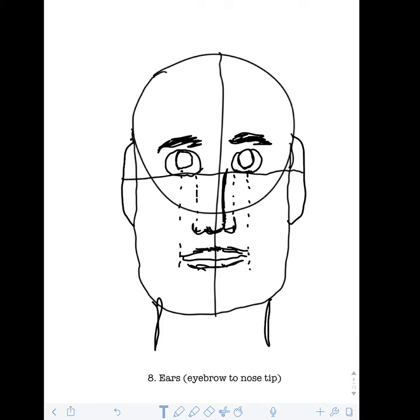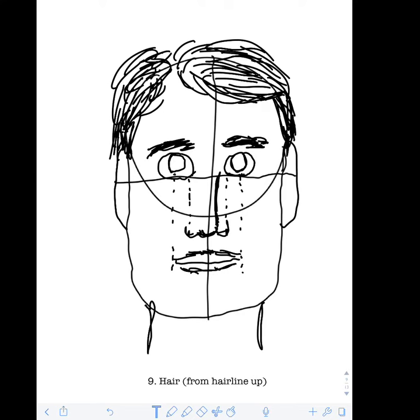Step 8: You can add the ears extending from the eyebrow to the tip of the nose. Step 9: You can add the hair. Remember to add it from the hairline up.